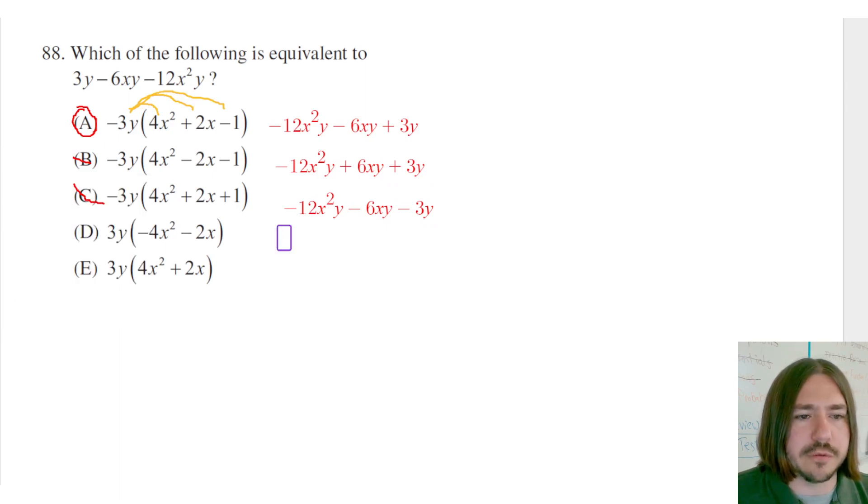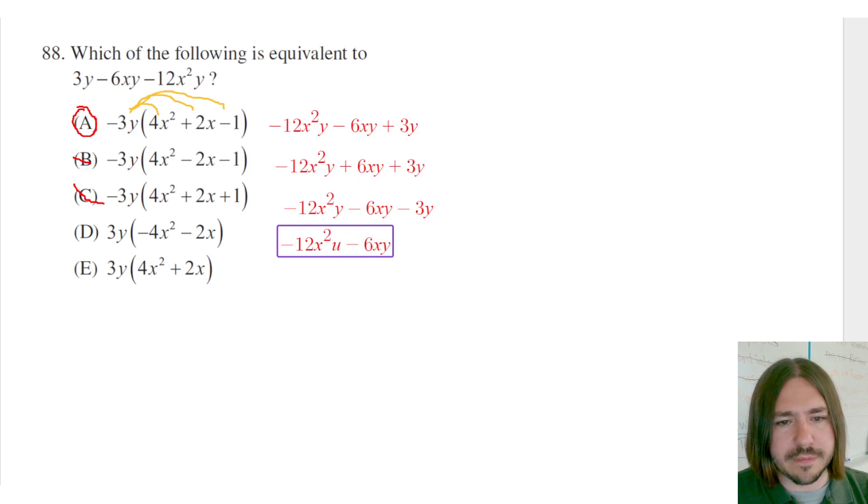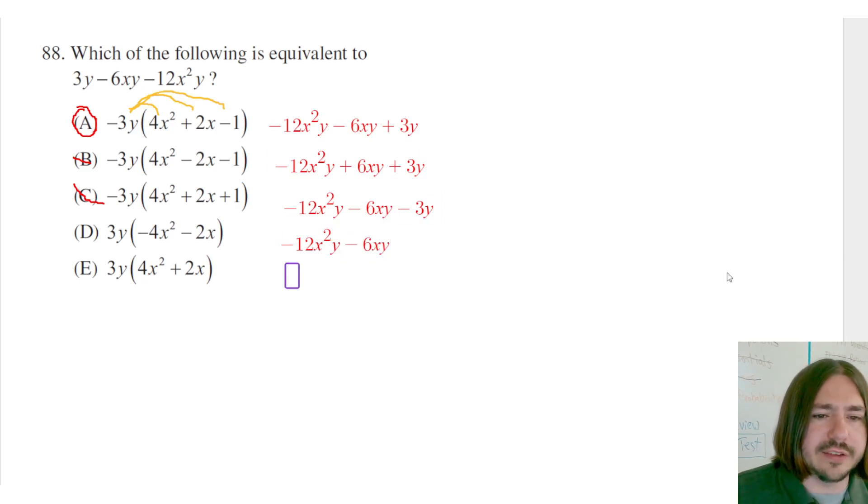Hopefully you can see that D and E are definitely not going to work. They don't even have enough terms here. Negative 12x squared y minus 6xy, yeah, that's missing that last term that's going to give us the 3y.